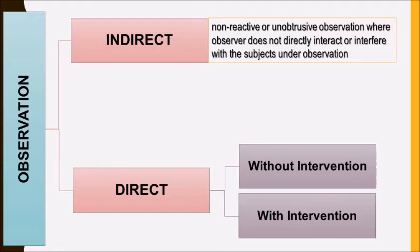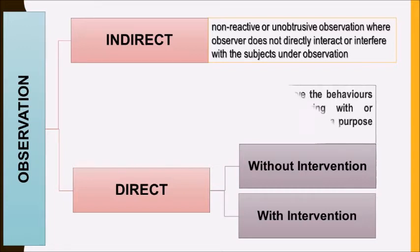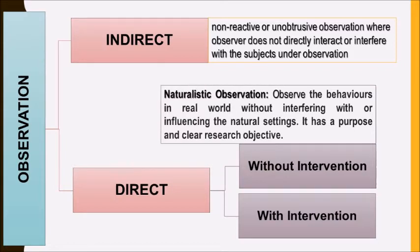The other major type is direct observation, and that can be divided into two types: direct observation without intervention and direct observation with intervention. Naturalistic observation is an observation of behavior in the real world without interfering or influencing the natural setting of the behavior. It has a clear and precise research objective. For example, observing animal behaviors in certain natural conditions, or observing because you find it difficult to understand their behavior in lab settings — so you observe them in their natural conditions.